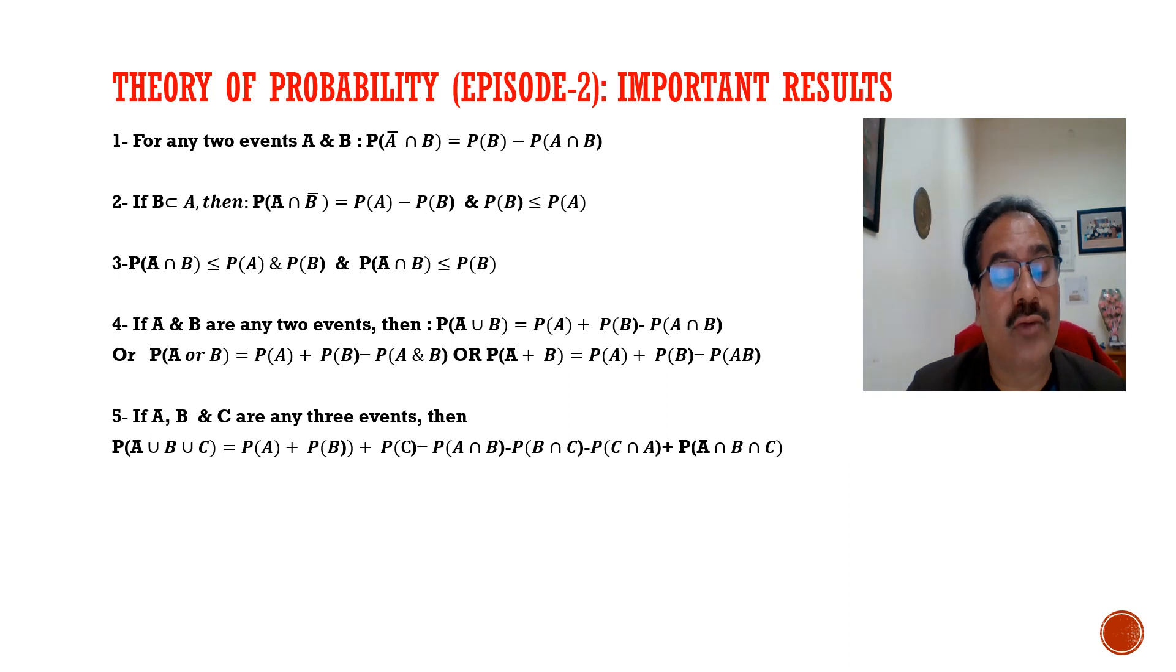If A and B are two events, then P of A union B is equal to P of A plus P of B minus P of A intersection B. This result may be written in these three ways: either this, or P of A or B equals P of A plus P of B minus P of A and B, or P of A plus B equals P of A plus P of B minus P of A into B.